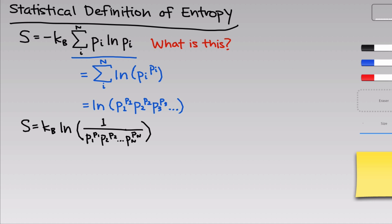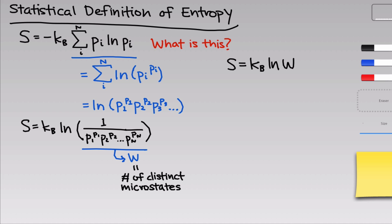Plugging this back into the original definition and inverting the argument of the natural log so that a negative sign pops out front, the two negatives cancel and we get S = k_B · ln(1 / (p_1^{p_1} · p_2^{p_2} · ... · p_N^{p_N})). This argument of the natural logarithm is a very large number called W, which corresponds to the number of distinct microstates that lead to a particular macrostate. We can now rewrite Boltzmann's definition as S = k_B · ln(W).